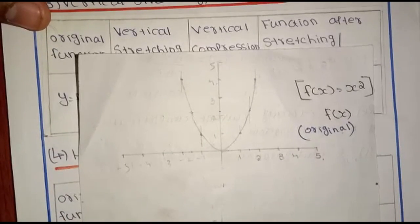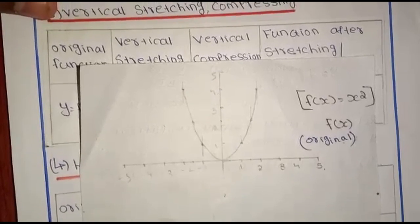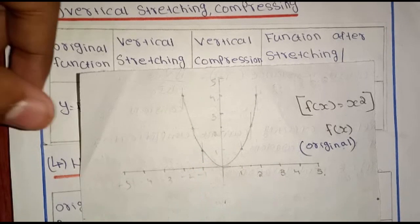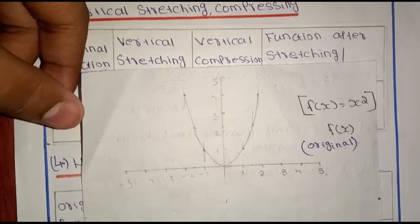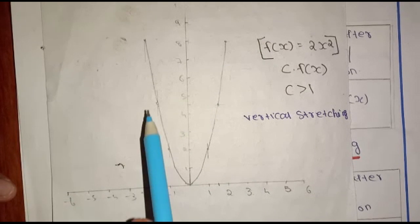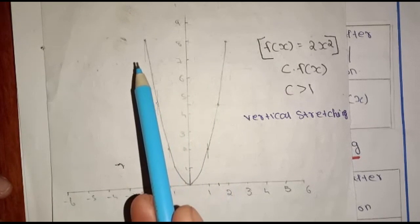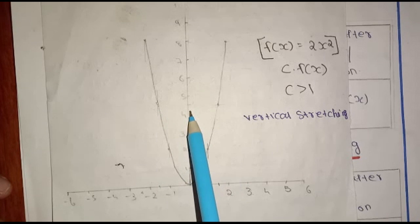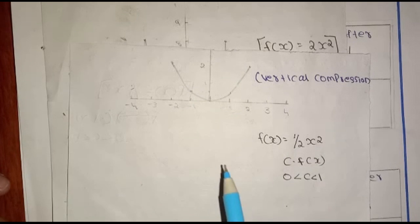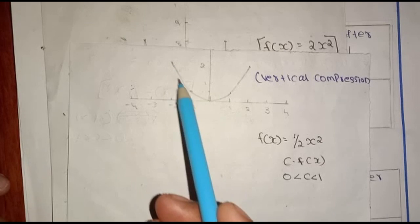Starting from the original function, if we plot points and the constant is greater than 1 — for example, the function 2x squared — it will stretch vertically and expand. If we add 4, we get 8, and it expands. If the function is between 0 and 1, such as half x squared, it is a compressed type, scaled by 1 over c.